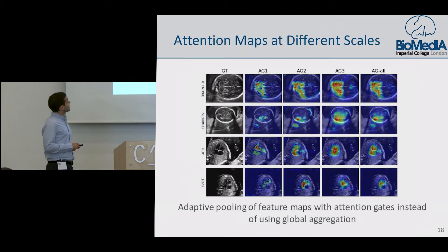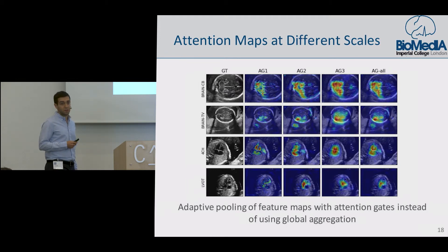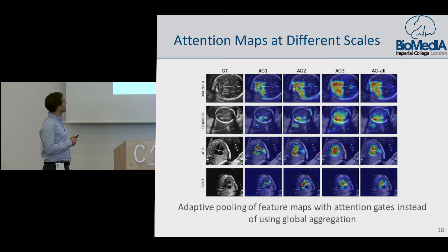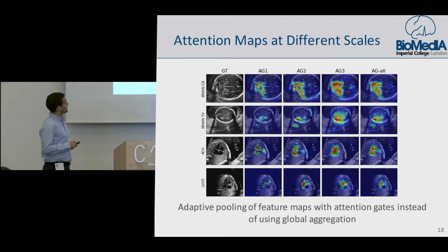We evaluated this model on an ultrasound image plane classification setting. For these given input images, we obtained attention gate salient regions — where the network pooled the feature maps — and we see that for chamber images, it picks the cardiac chambers. As we go deeper in the network, it picks more coarse information, and this is a more adaptive gating.